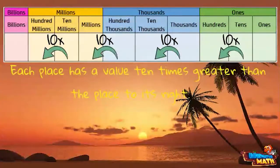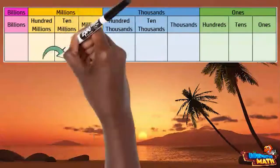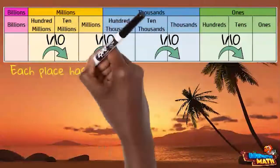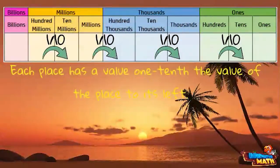Each place has a value 10 times greater than the place to its right. So that means each place also has a value that is one tenth of the place to its left.